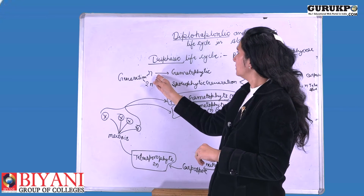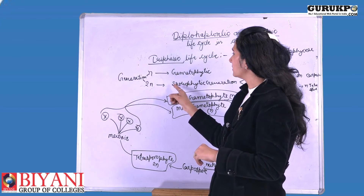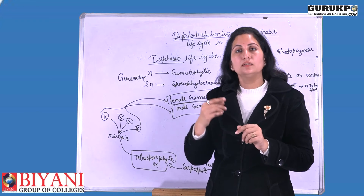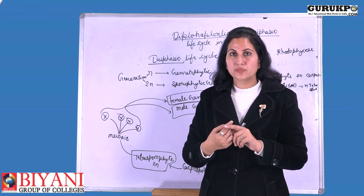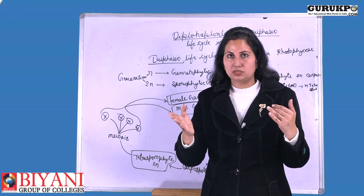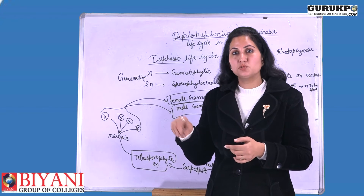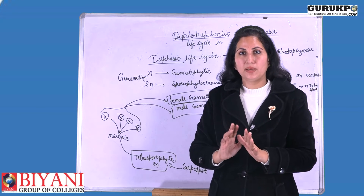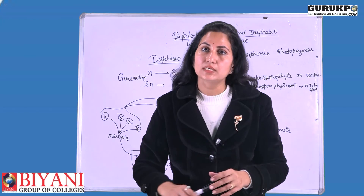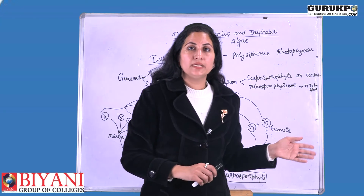In the triphasic life cycle, two generations are found — one is the haploid generation and another is the diploid generation. The haploid generation forms the gametophytic plant. The diploid generation forms two types of sporophytic plants: one is the carposporophytic plant, which is intermediate between the gametophytic and tetrasporophytic plant, and another is the tetrasporophytic plant. These two are the diploid types of plant found in this type of life cycle.